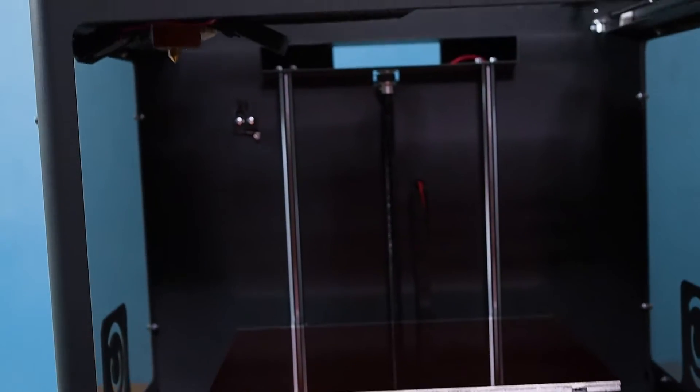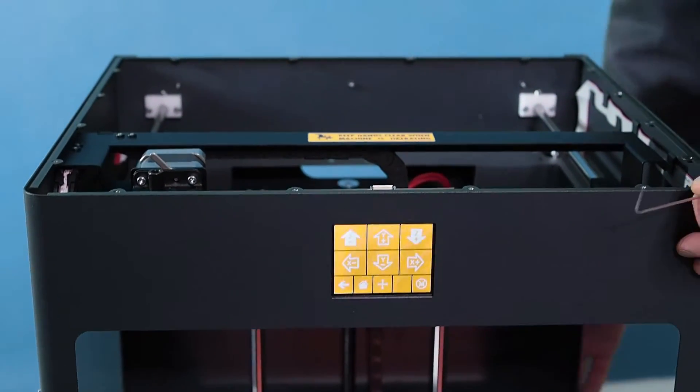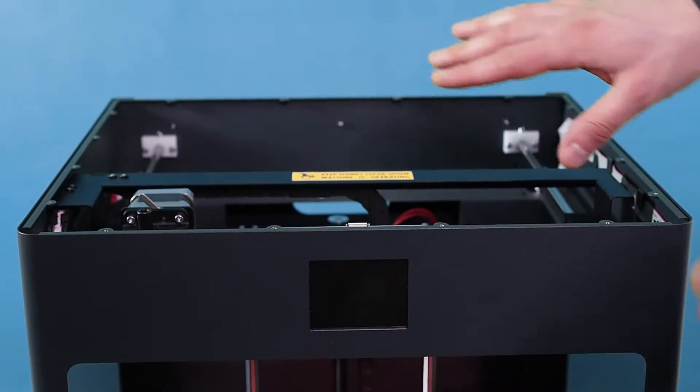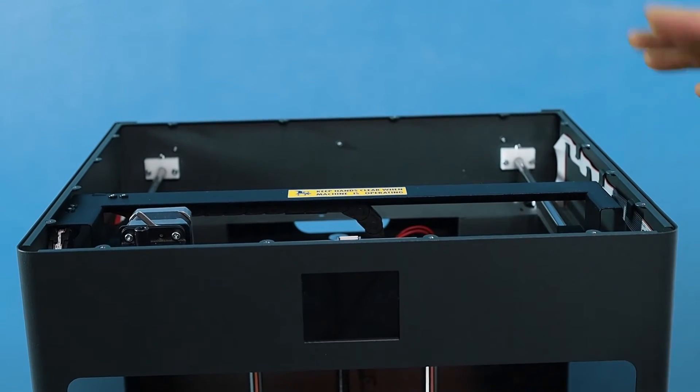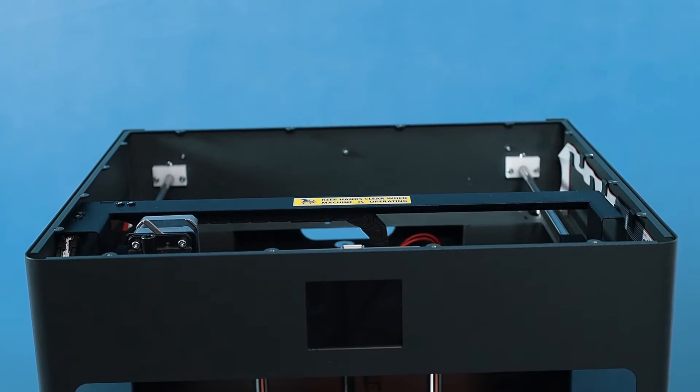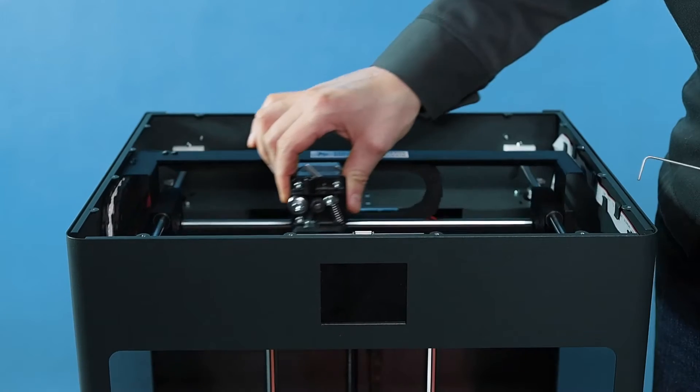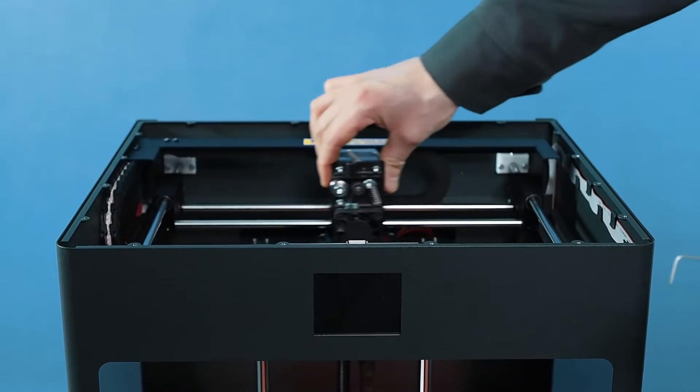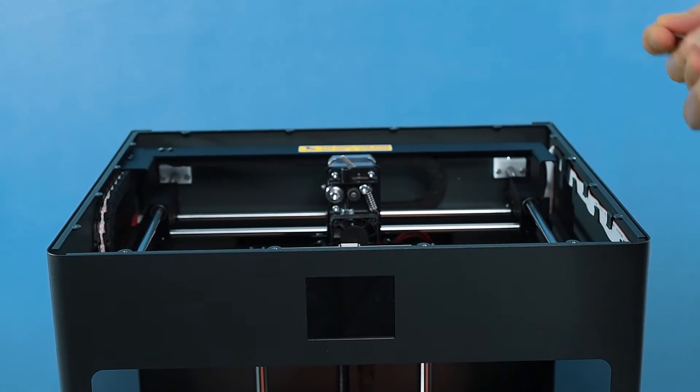At this point we can flip the machine off and unplug it because we never want to reach inside the machine while it's on to prevent terrible injuries or bad things from happening. At this point you're able to move the extruder freely because the motors aren't on.